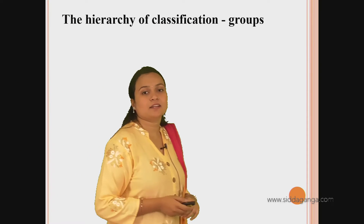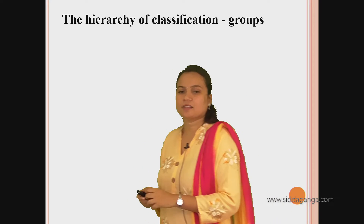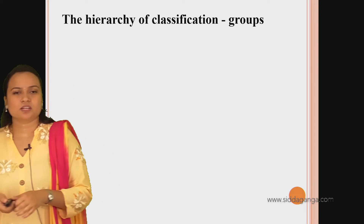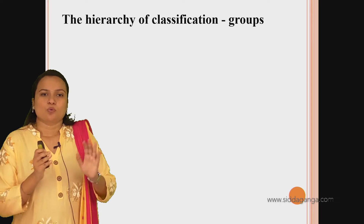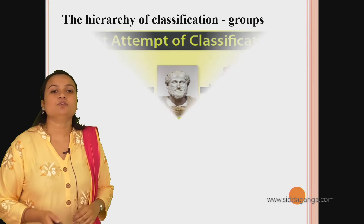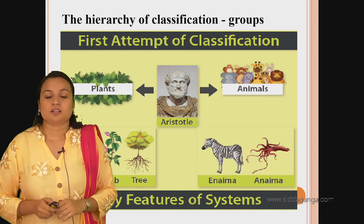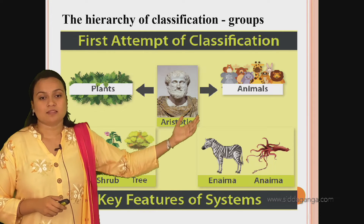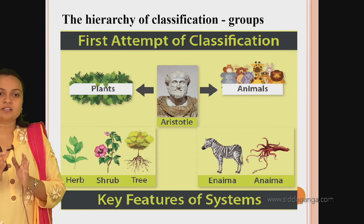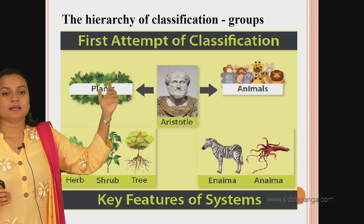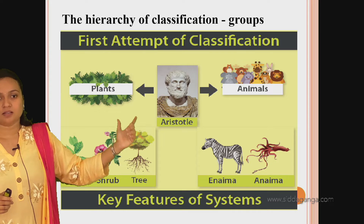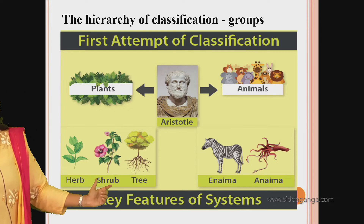Coming to the hierarchy of classification - grouping of organisms is necessary to study them in groups. The first attempt at classification was done by Aristotle. Aristotle differentiated organisms into two groups: plants and animals. In plants, he classified organisms into three types: herb, shrub, and tree.